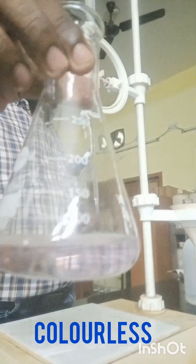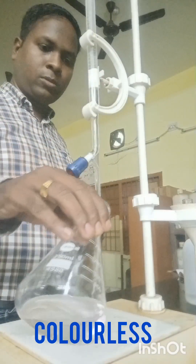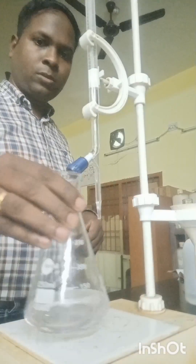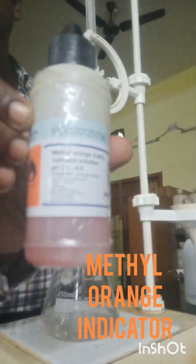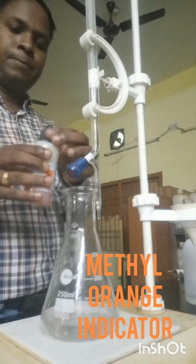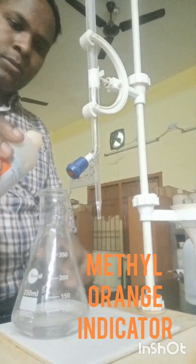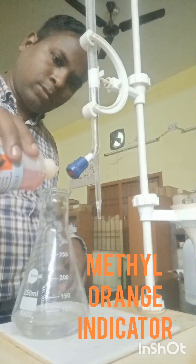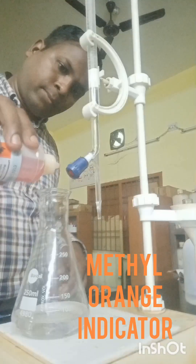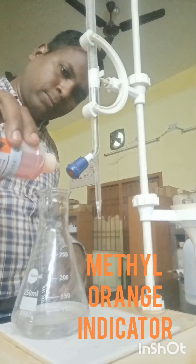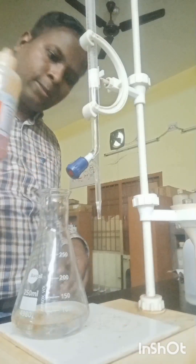Then I will add one drop of methyl orange indicator. The color of the solution becomes straw yellow. I will note down the final burette reading, which becomes the initial burette reading for the second titration. Look — this solution becomes straw yellow.